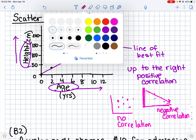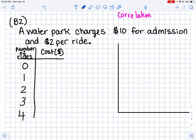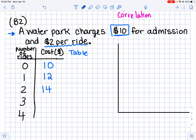Moving on to B2 — here we were given a description: a water park charges ten dollars for admission just to get in, then two dollars every time you go on a ride. We can make a table of values. For zero rides it costs ten dollars; one ride is twelve dollars; two rides is fourteen dollars; three rides is sixteen dollars; and four rides is eighteen dollars.